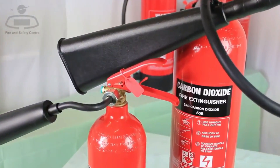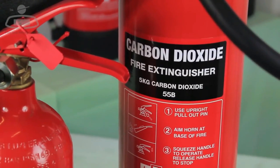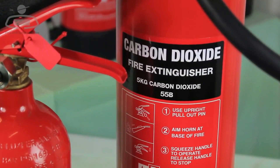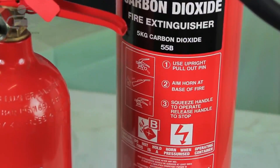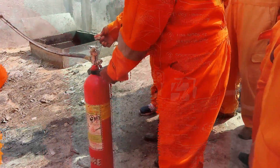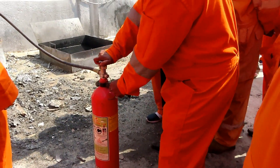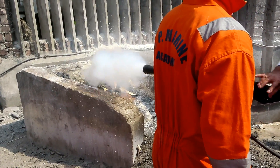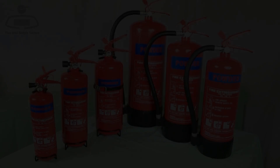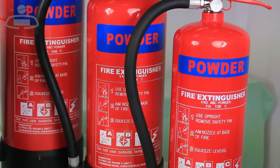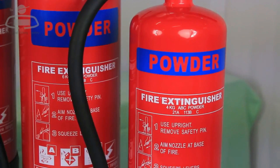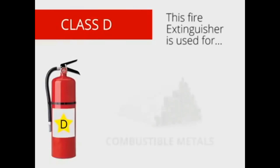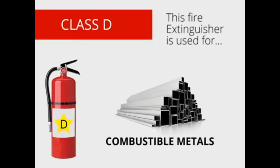CO2 extinguishers are used for electrical fire risks. They can also be used on Class B fires such as paint and petroleum. DCP can be used on Class A, Class B, Class C, and Class D combustible metal fires as well.